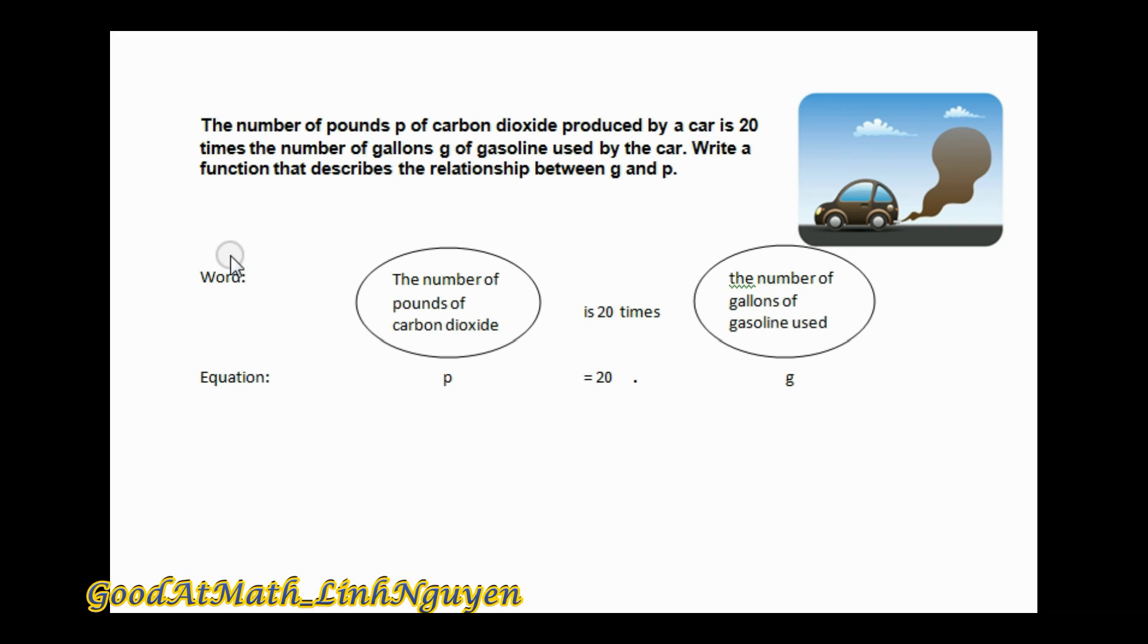So write a function that describes the relationship between G and P. So now I have the number of pounds of carbon dioxide, it's P, right? It's 20 times the number of gallons of gasoline used, which is G. So I have the equation P equals 20 times G.